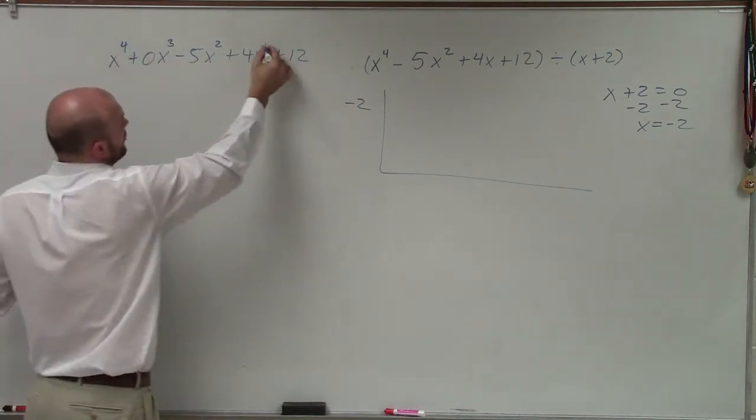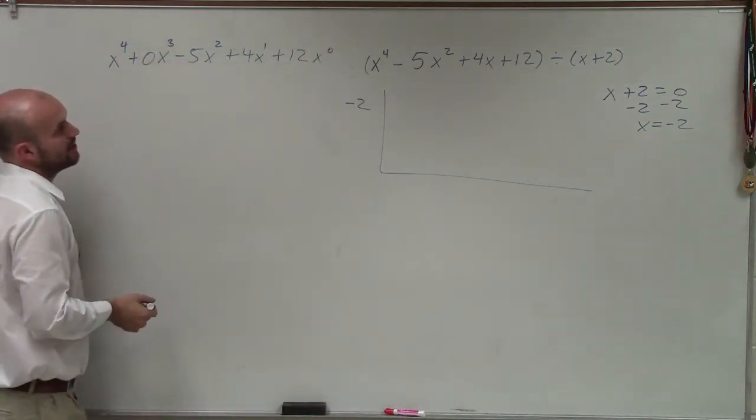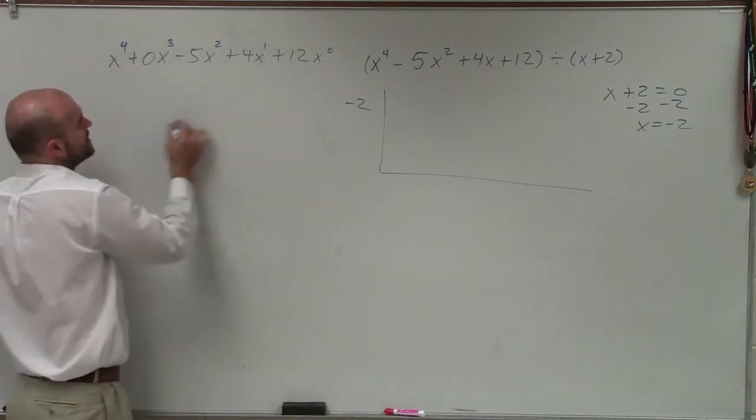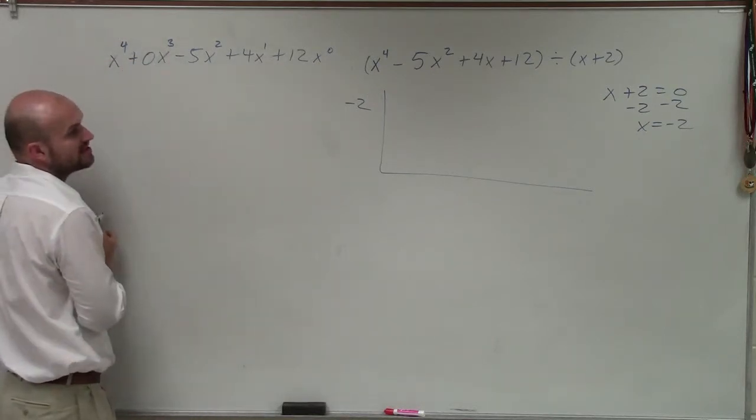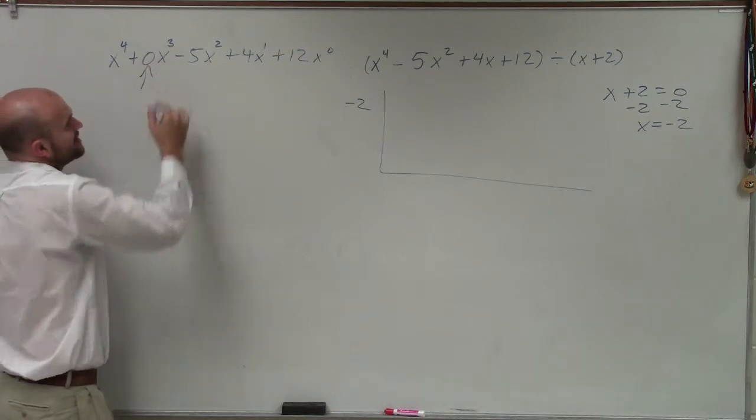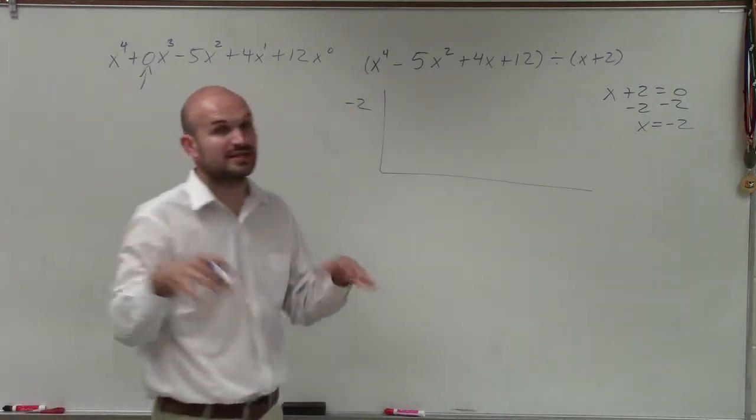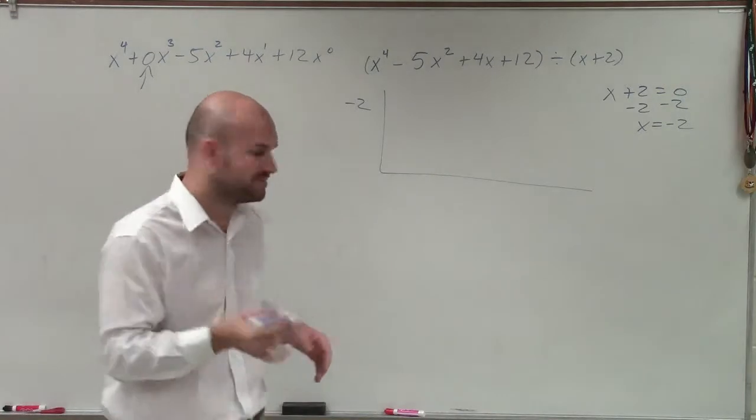If I was going to go descending order, I could even put an x to the 0 power there, but you need to make sure you have descending order. So if you're missing a term like we are in this case, we're missing x cubed, I need to make sure I include that 0. And if we don't have a coefficient that we see, we know that the coefficient has to be 1.